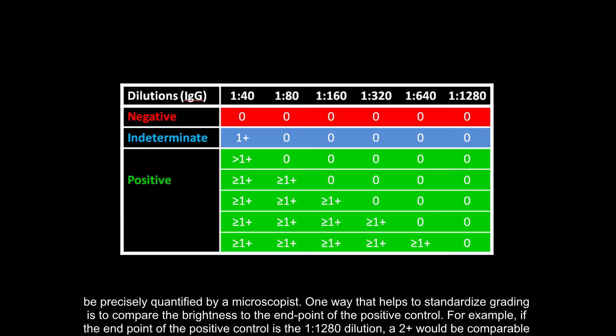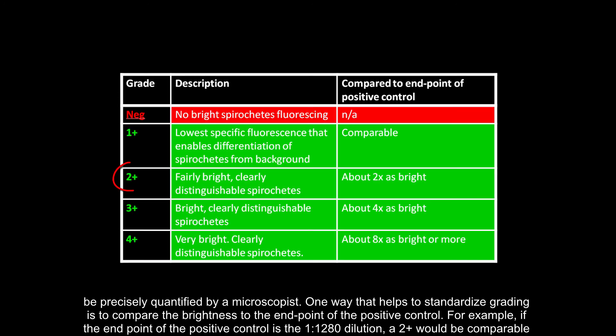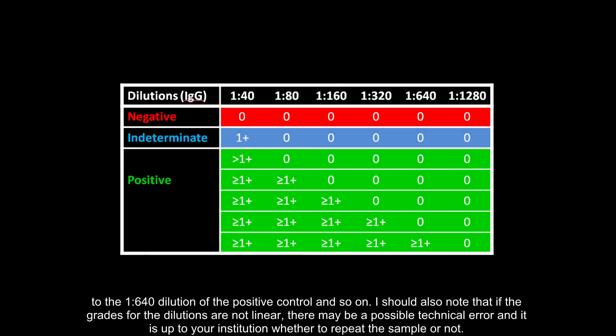One way that helps to standardize grading is to compare the brightness to the endpoint of the positive control. For example, if the endpoint of the positive control is the 1 to 1280 dilution, a 2 plus would be comparable to the 1 to 640 dilution of the positive control, and so on.